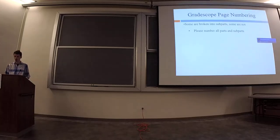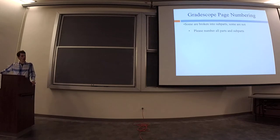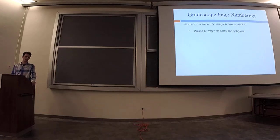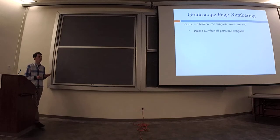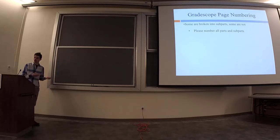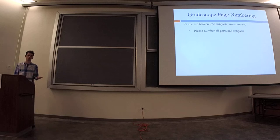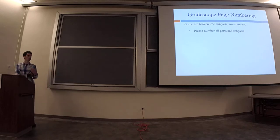One more thing on homework 3: Gradescope asks you to label which page each problem is on. For homework 3, there are subparts — part one question one, part one question two. Only some of the parts will ask you to label the subparts, so just label the ones that it asks you to. The reason is it helps divide up who grades what.